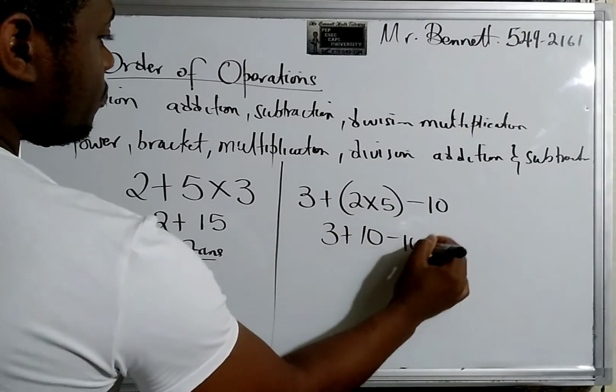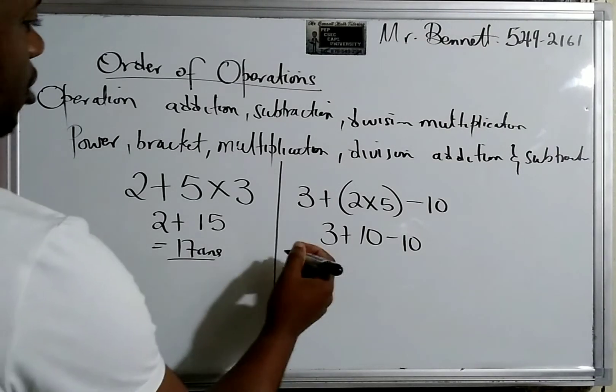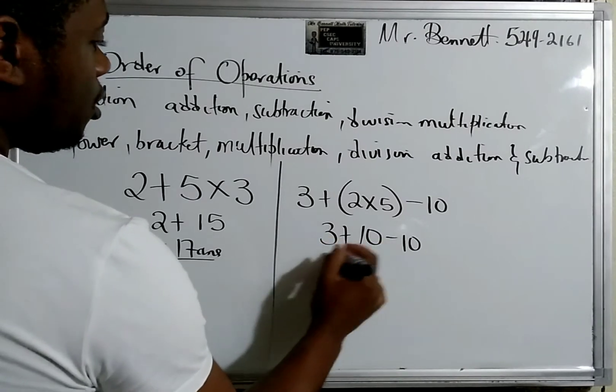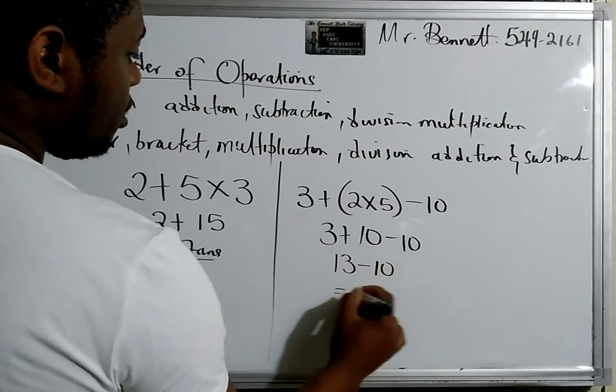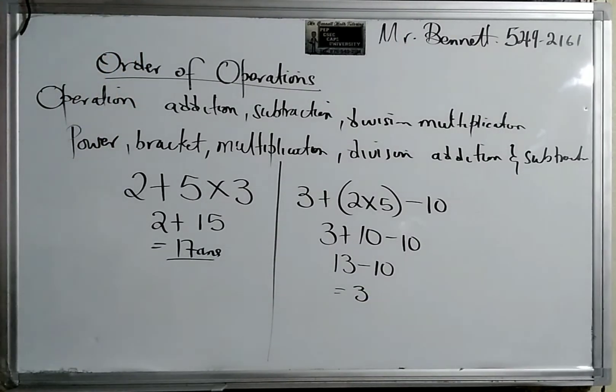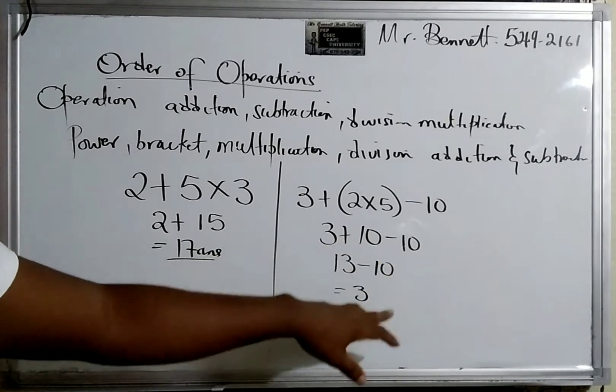3 plus... so we can just add 13 minus 10, that gives us 3. And if we had said 10 minus 10 is zero, 3 plus 0 will be 3.